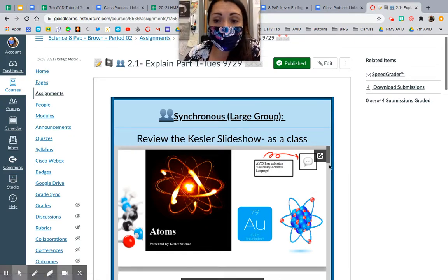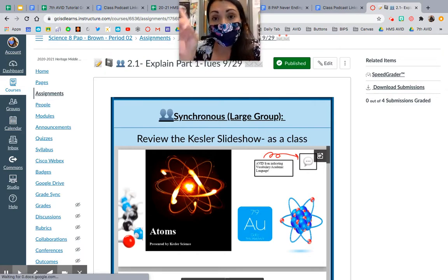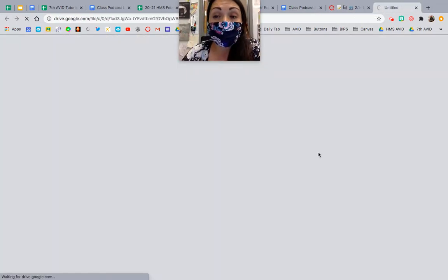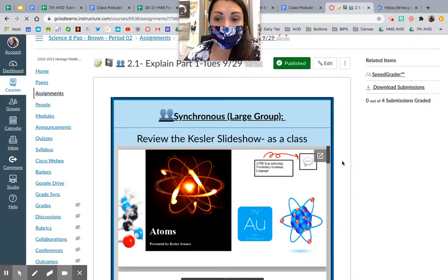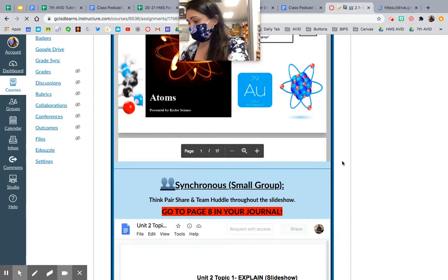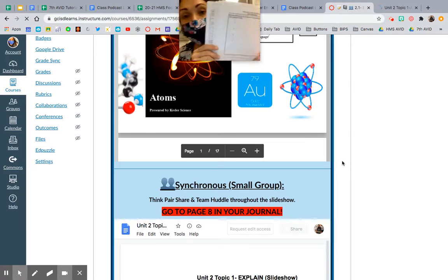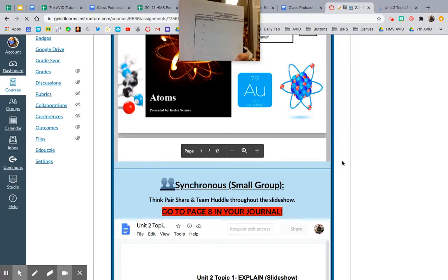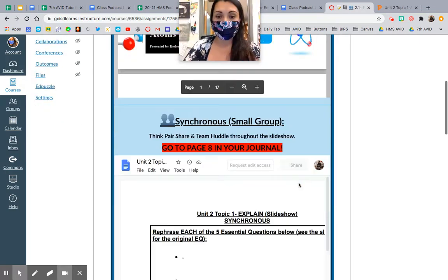Okay, y'all. So my favorite thing to do, like I've said before, is you always want to open this up into a new tab. So that way you can have it. It's easy to see. And then you can save it and star it. So you have it for future use. And then what y'all are going to do is go to page eight of your journal. So page eight of your journal is our essential question rewrite.